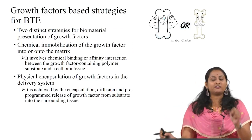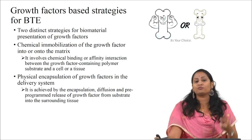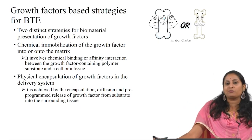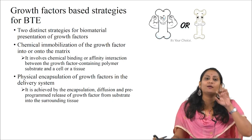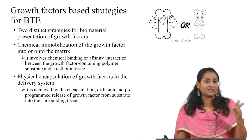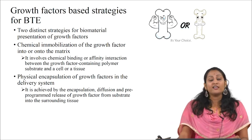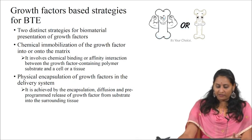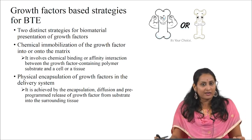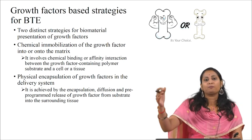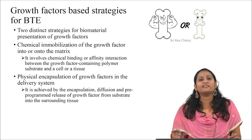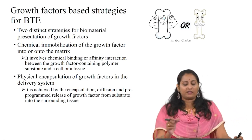There are two distinct strategies for biomaterial presentation of growth factors. First, they can be chemically immobilized into the substrate, such as a polymeric matrix. Chemical immobilization involves chemical binding or affinity interaction between the growth factor-containing polymer substrate and a cell or tissue, producing a strong, localized interaction based on the physical and chemical properties of the substrate as well as the growth factor dose.